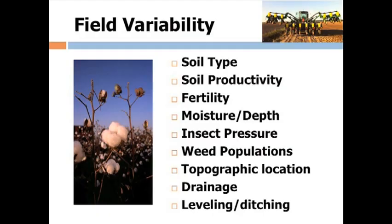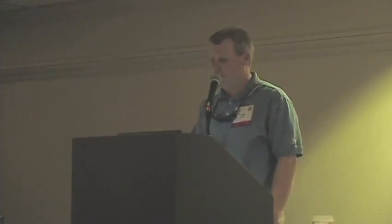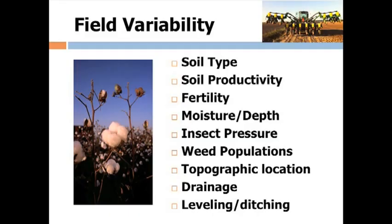Moisture and the depth of the moisture were key factors for us to focus on, because as we change soil types, that moisture may be deeper in the soil on one particular soil type than another. Or you might have a heavier crust on one soil type that actually lifts the planter up out of the ground and you don't get as good moisture contact with your seed. Other things we focused on were topographic or drainage leveling issues and areas we can maybe cut back on that generally don't produce much anyway.